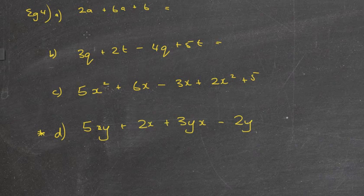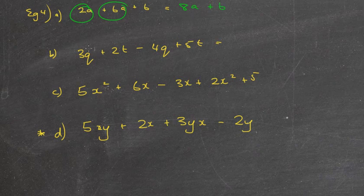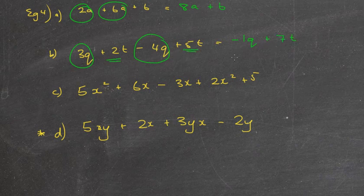Welcome back. So, let's look at the first one. Hopefully, the first one you recognize there was 2As plus 6As which is 8As and then we've got 6 left over. The next one, 3Qs minus 4Qs which is minus 1Q or just minus Q. Then I've got 2Ts plus 5Ts which makes 7Ts. You could have written just minus Q plus 7T. You could also have written 7T minus 1Q or just Q.